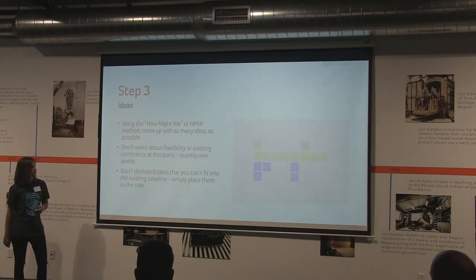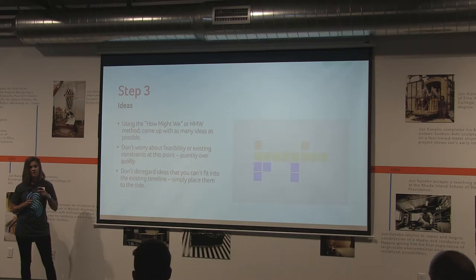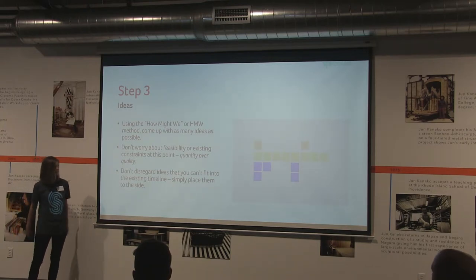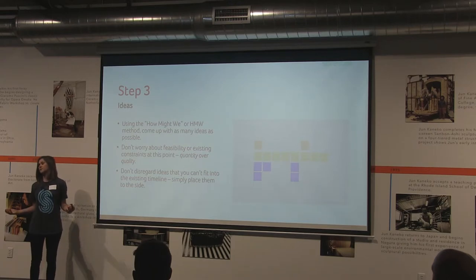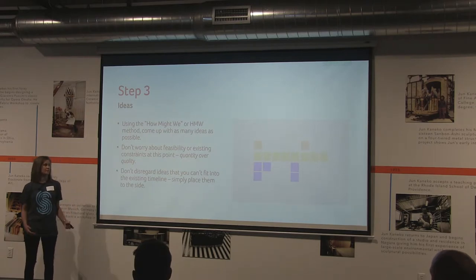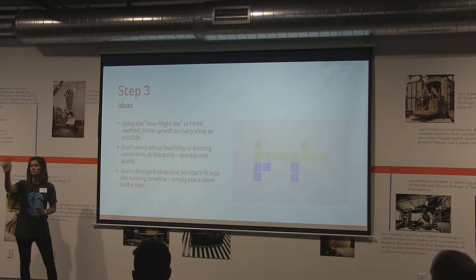Step three is where the fun really begins — this is the ideation part. We use a method called 'How Might We,' which is really about taking ideas and reframing them into something new — a better brainstorming activity that gets people really thinking. We don't even want to think about feasibility at this point; if we fall in love with an idea, as a software department we'll figure out a way to make it work. And if crazy ideas don't fit into the timeline, they're still worth exploring.